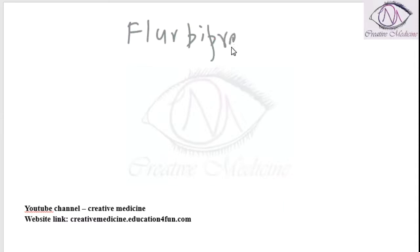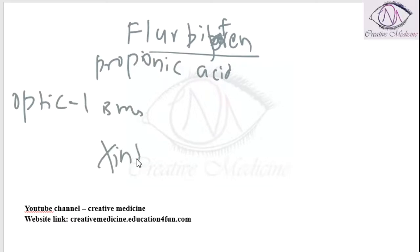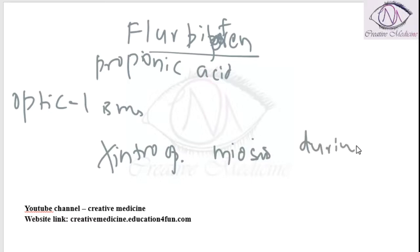Flurbiprofen is a propionic acid derivative type of NSAID. It is actually an optical isomer and it can prevent the intraoperative miosis during cataract surgery. So it is used for prevention of intraoperative miosis during cataract surgery.